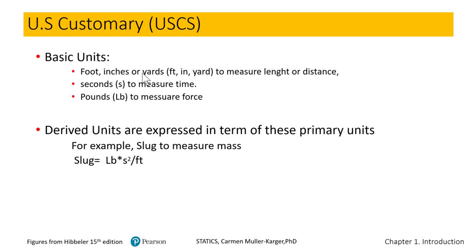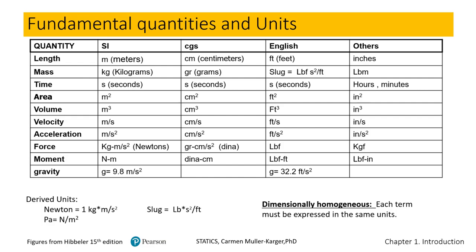In the US customary unit system, the base units are foot, inches, or yards for distance, seconds for time, but pounds for force. In SI, mass is the base unit, but here it is force. The derived unit for mass is the slug, equal to pounds divided by gravity — therefore pounds times seconds squared over foot. We have a table showing units for SI, US customary, and other metric units. We will mainly use these two columns, or convert every unit into them.